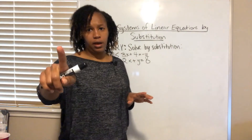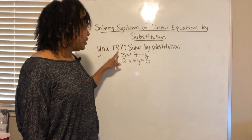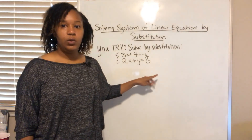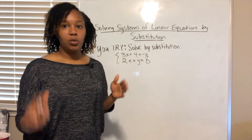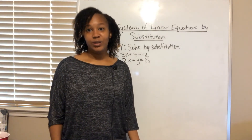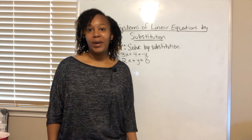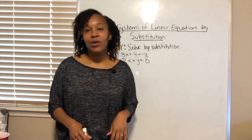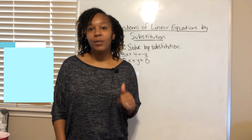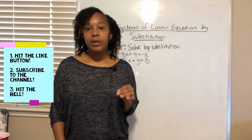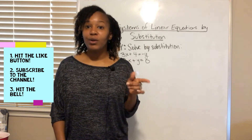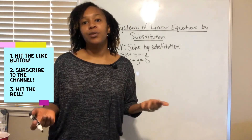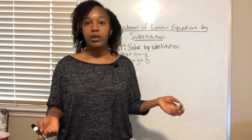Now I want you to try a problem on your own. Pause the video and see if you can solve this system by substitution: 3x plus 4 equals negative y and 2x plus y equals 0. Give it a shot! The answer is (negative 4, 8). If you got that, you're good to go and can move on to the next video. If you'd like to see how to work it, stick around.